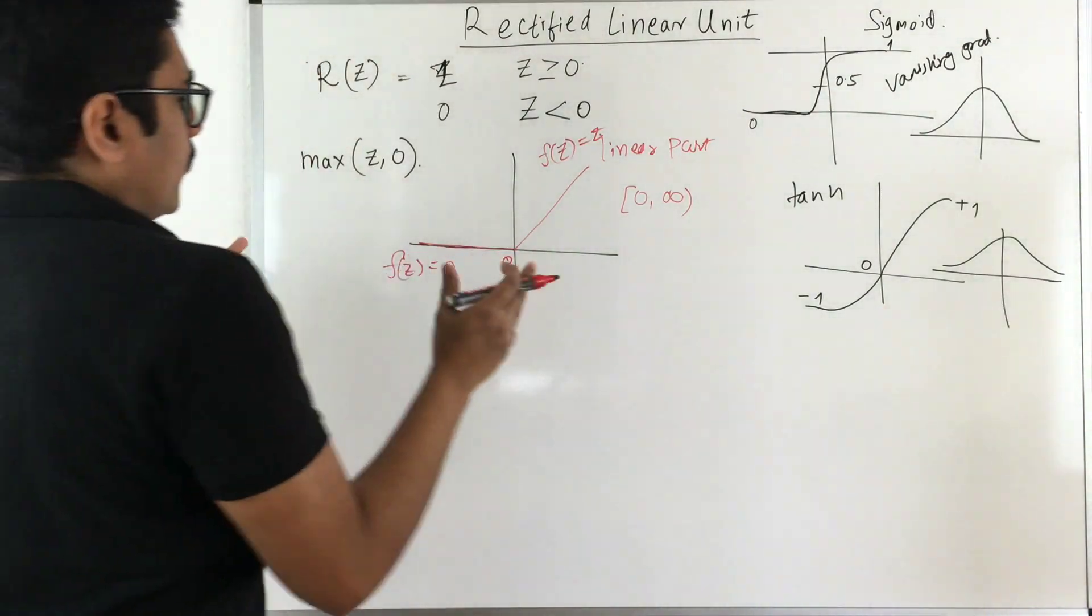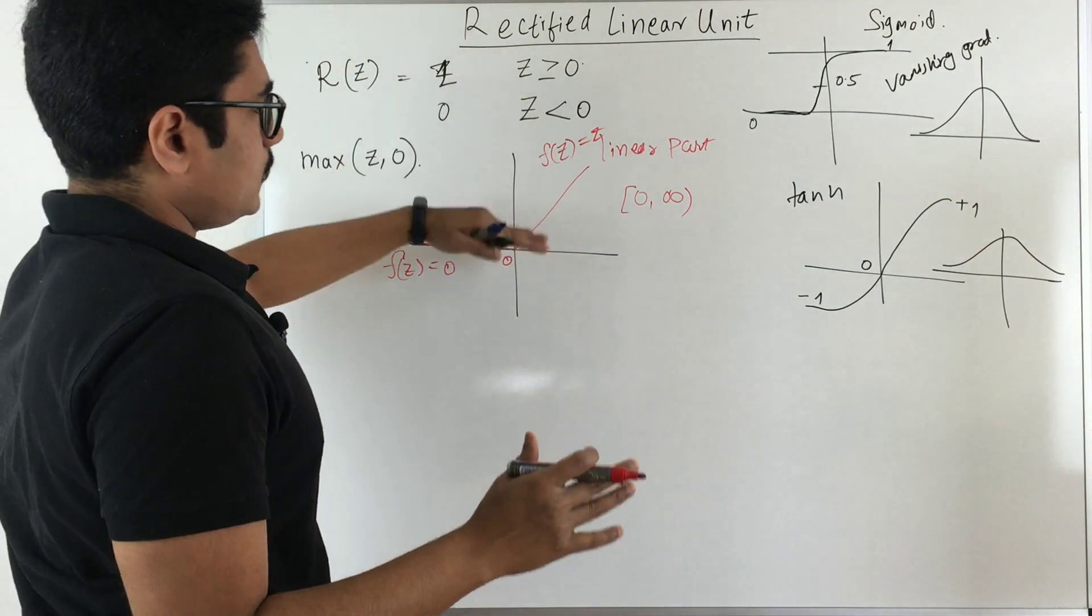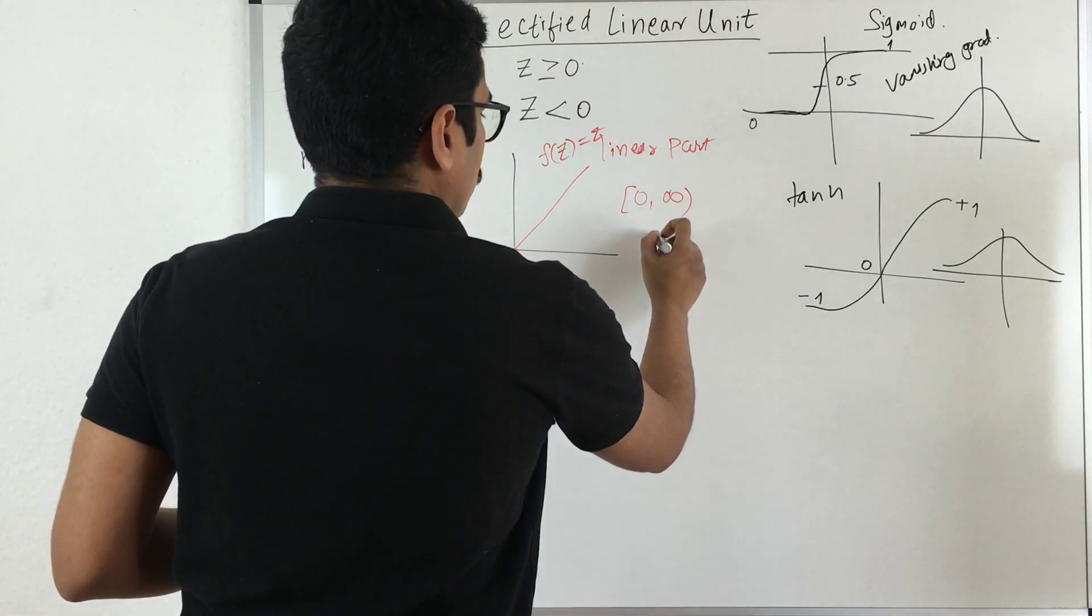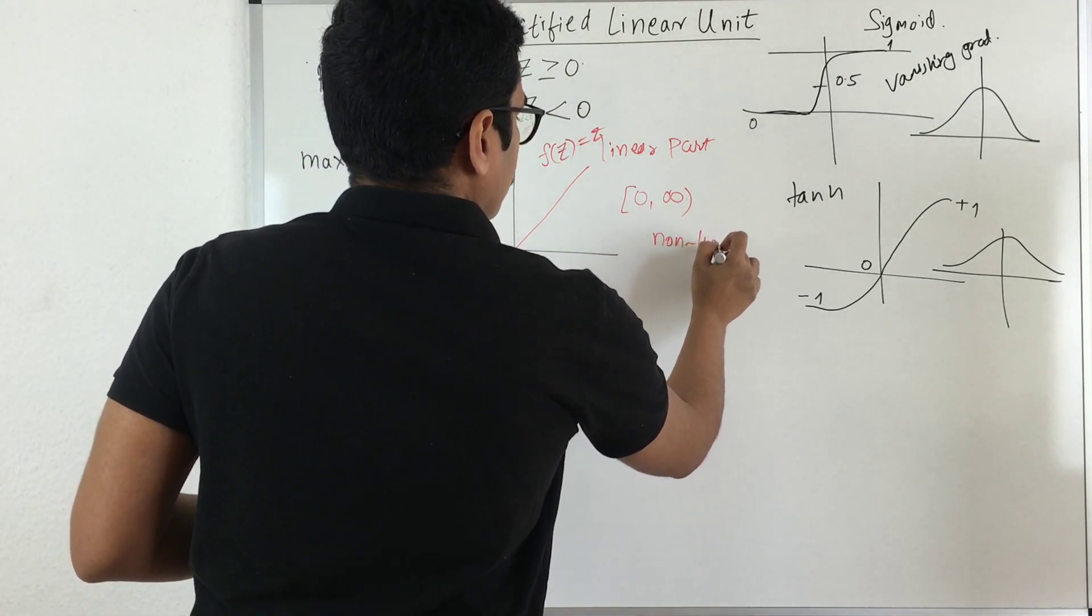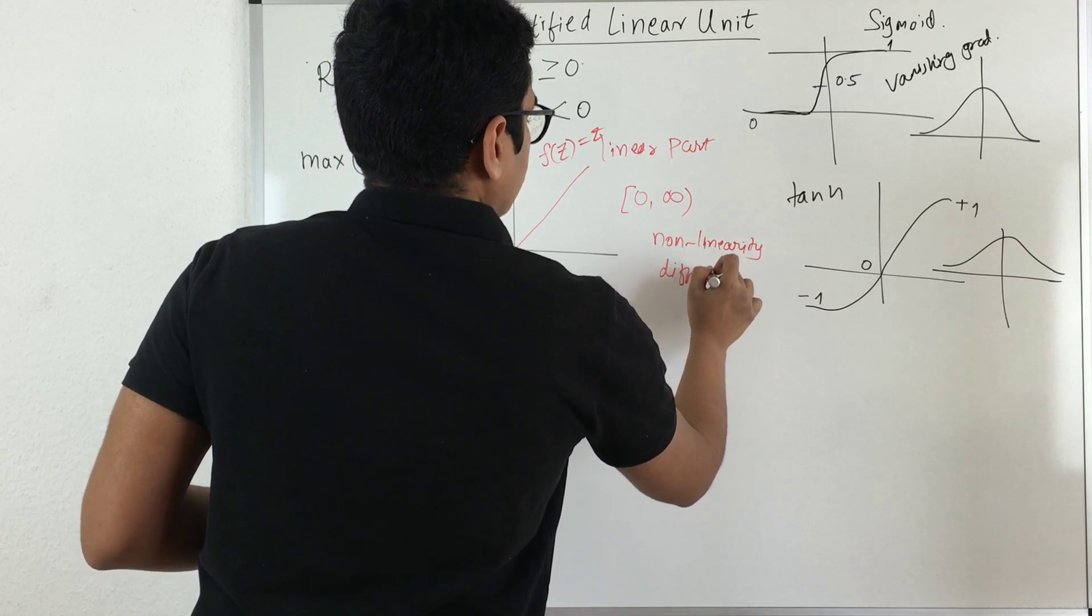Now you can see that there is no particular problem, that is vanishing gradient, that is occurring in this particular function. Also it satisfies both properties, that is non-linearity as well as it is differentiable.